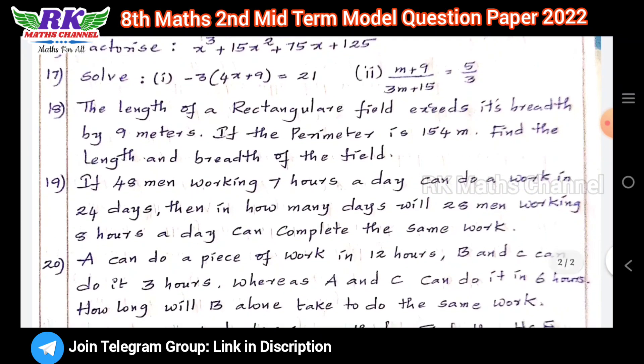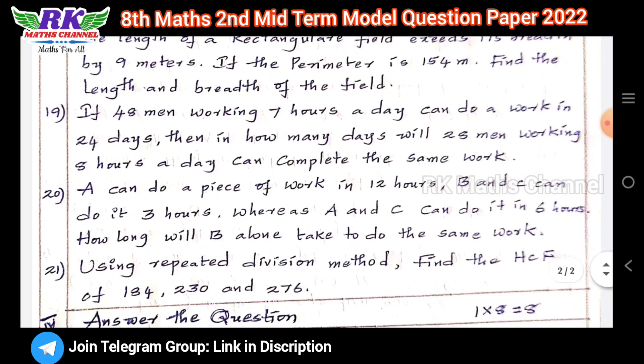Question number 19 is compound proportion. 48 men working 7 hours a day can do work in 24 days. Then in how many days will 28 men working 8 hours a day complete the same work?